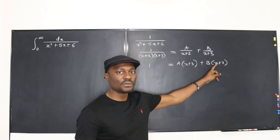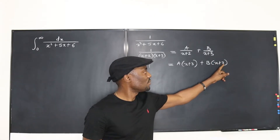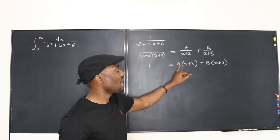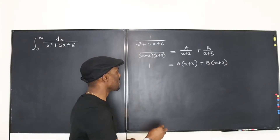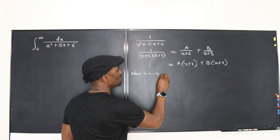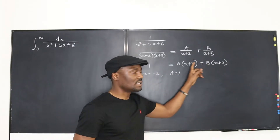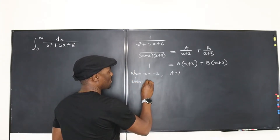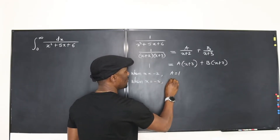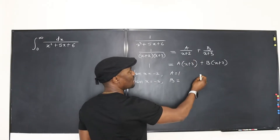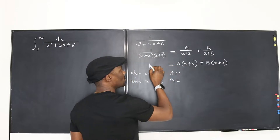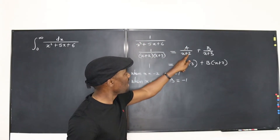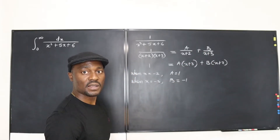Starting with x equals negative 2: negative 2 plus 2 is 0, so the B term zeroes out. Negative 2 plus 3 is 1, so 1 times A equals 1, meaning A equals 1. Then choose x equals negative 3: the A term zeroes out, and negative 3 plus 2 is negative 1, so negative B equals 1, which means B equals negative 1. Remember, these are constants, so their values don't change regardless of which x you substitute.